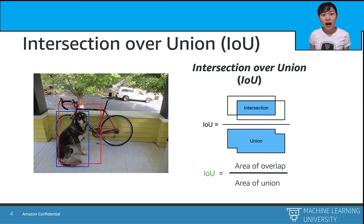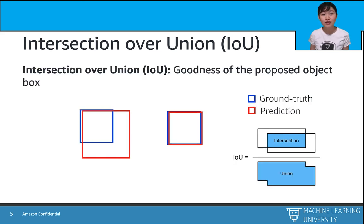So IoU is a number between 0 and 1 that measures how close the two bounding boxes are. If the IoU is closer to 0, then the bounding box prediction might be bad. If the IoU is closer to 1, then the bounding box prediction is great.